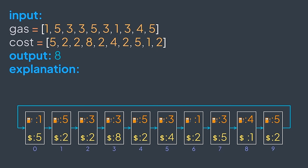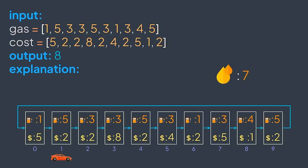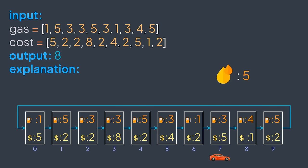For example, with 10 stations the output is 8. Starting from station 8 with no gas: add 4, pay 1; add 5, pay 2; add 1, pay 5; add 5, pay 2; add 3, pay 2; add 3, pay 8; add 5, pay 2; add 3, pay 4; add 1, pay 2; add 3, pay 5 — and we've been able to go back to station 8. The amount of gas never became negative.